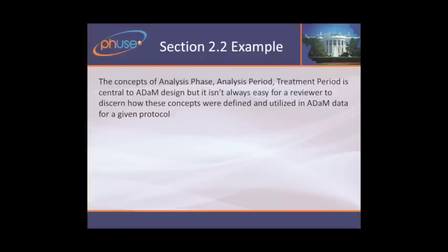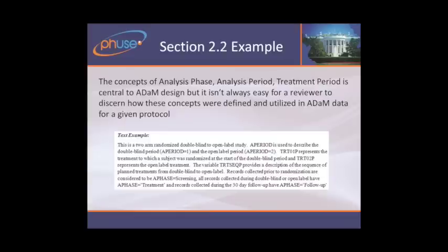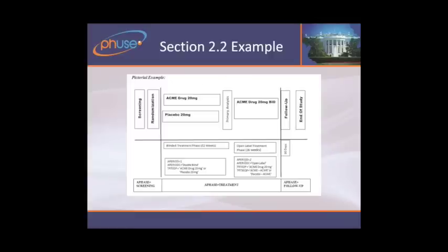We advocate that at minimum you describe in text how you're using ADAM concepts — for example, it's a two-arm, double-blind, open-label study; I've used analysis period in this manner, treatment in this manner, I'm using TREATCP, and A-phase to help identify phases of the trial. Alternatively, you could take the protocol schema — the picture that shows phases of the trial, arms, and length of time — and annotate on there: here are my phases, here are my periods, and I've used these values of treatment. In a quick snapshot, the user can get a fairly good idea of how you're implementing the ADAM model with respect to the protocol design.